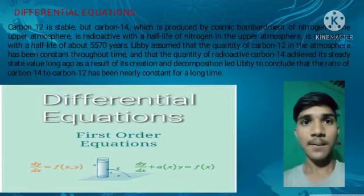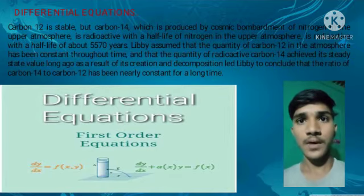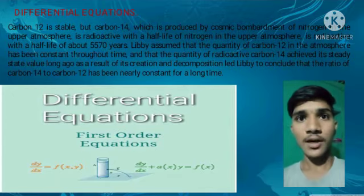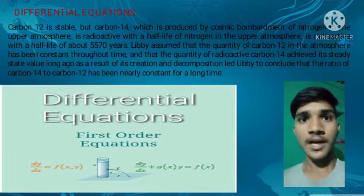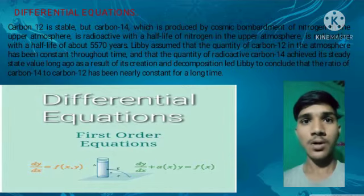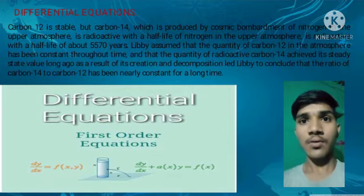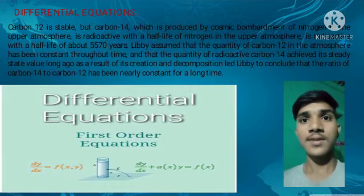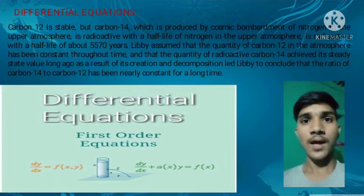Carbon-12 is stable, but Carbon-14, which is produced by cosmic bombardment of nitrogen in the upper atmosphere, is radioactive with a half-life of about 5570 years. Libby assumed that the quantity of Carbon-12 in the atmosphere has been constant throughout time, and that the quantity of radioactive Carbon-14 achieved a steady-state value long ago as a result of its creation and decomposition. This led Libby to conclude that the ratio of Carbon-14 to Carbon-12 has been nearly constant for a long time.